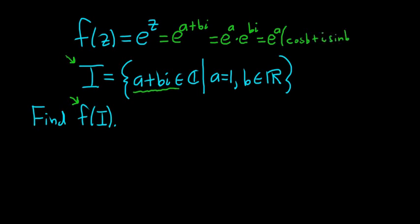And this will help us when we try to figure out what f of I is. So let's take an element of f of I. So what would that be? So f of I, let's write out the set, is equal to the set of all elements of the form f of a plus bi.